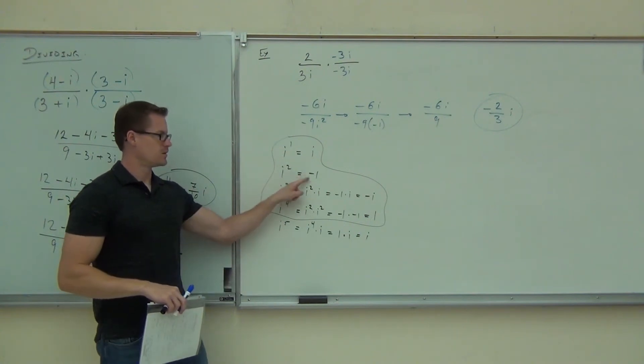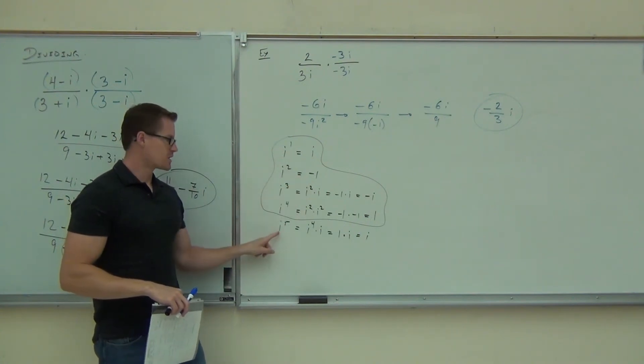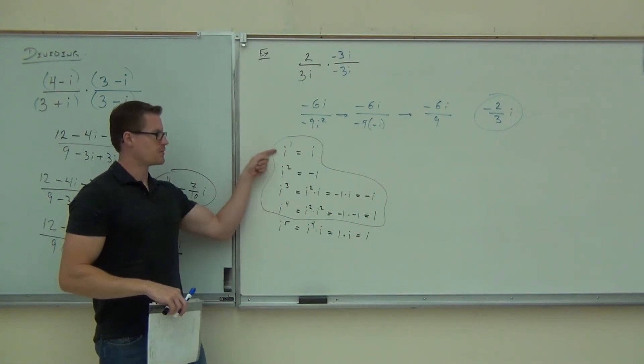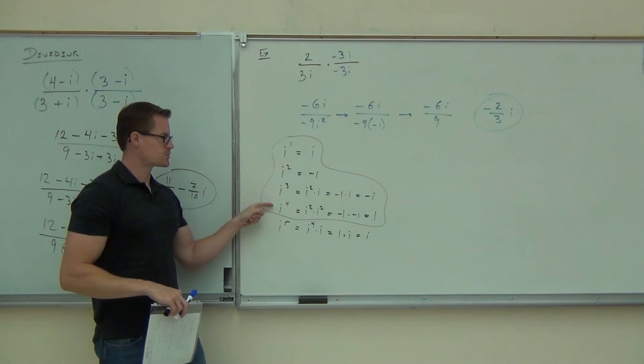i to the fifth. No, negative one. How much is i to the seventh? How much is i to the eighth? How much is i to the ninth? Ten, eleven, twelve, thirteen, fourteen, fifteen, sixteen, seventeen, eighteen.